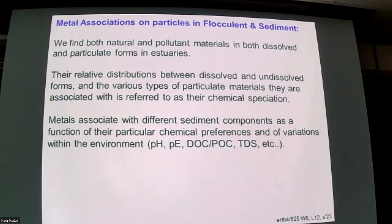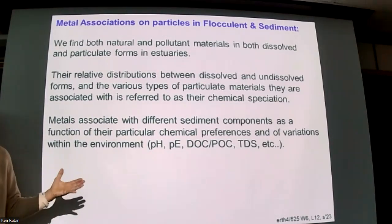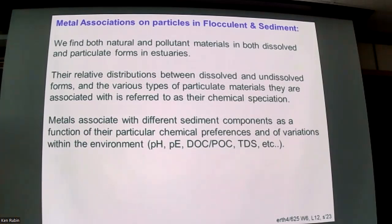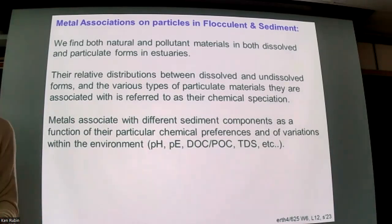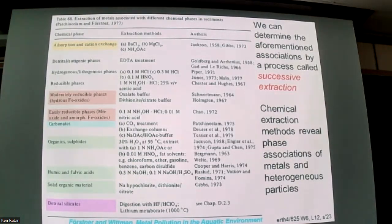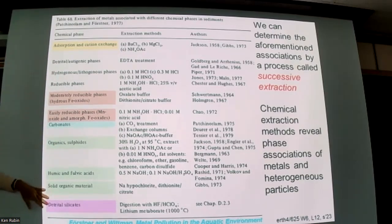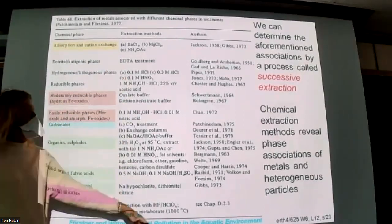Now we want to think about what happens to complex particles in the environment — including estuaries — and the chemical elements associated with them once exported into sediments. One approach is metal speciation analysis: subjecting aggregated particles to a range of different chemical extractants of increasing intensity to see what metals come off. This doesn't give an exact answer, but using extractants that mimic processes allows us to assess how metals are associated and how labile they are. A table shows different phases being targeted within a particle, the chemical extraction method used, and citations.